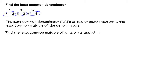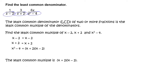First, write out the prime factorization of each expression. x minus 2 equals x minus 2; x plus 2 equals x plus 2; x squared minus 4 equals the quantity x plus 2 times the quantity x minus 2. So, the least common multiple is the quantity x plus 2 times the quantity x minus 2.